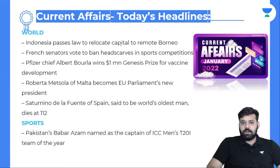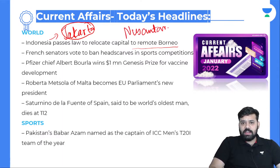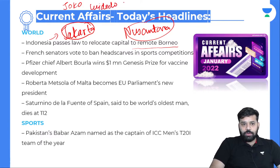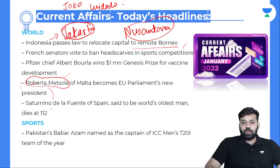World headlines: Indonesia passed a law to relocate its capital to remote Borneo. The present capital is Jakarta, but due to climate change, Jakarta is reportedly going to be submerged. The new capital will be Nusantara, and this bill was passed by the parliament. The Prime Minister of Indonesia is Joko Widodo. French senators voted to ban headscarves in sports competitions.